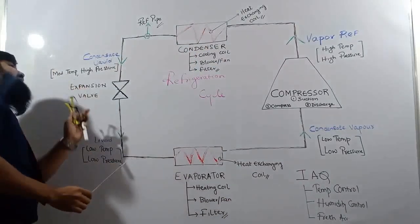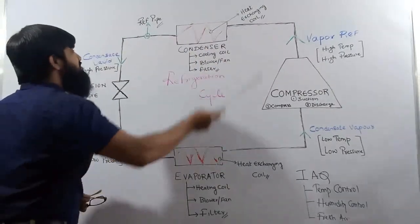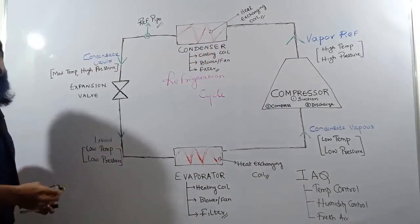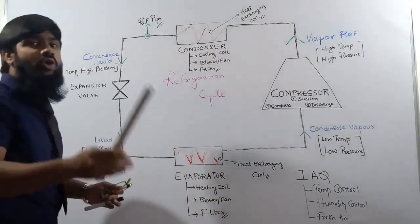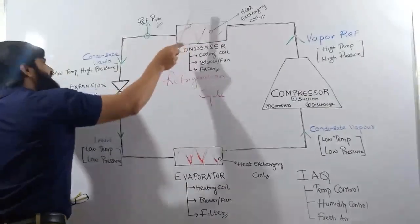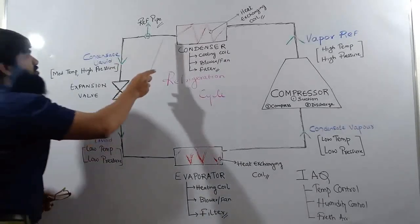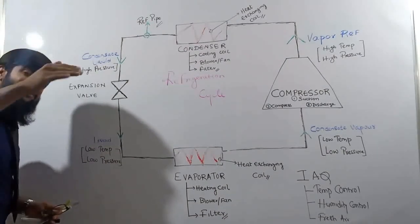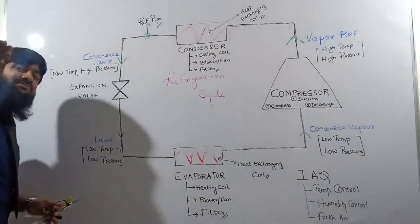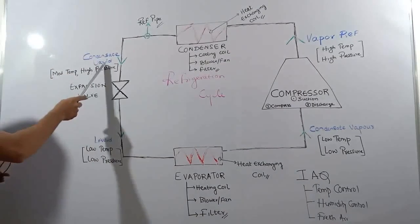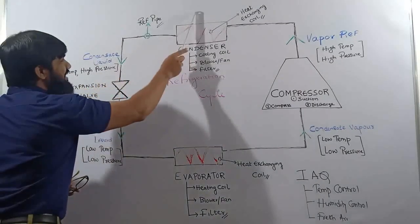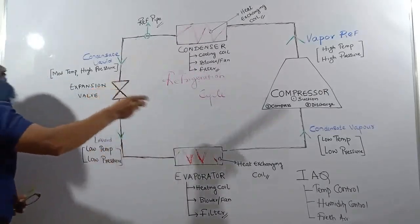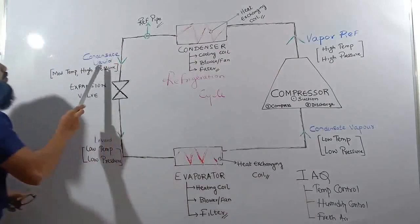The atmospheric temperature is lower than the refrigerant temperature residing within the heat exchanging coil. As we know, heat transfers from a high temperature body to a low temperature body, so heat is rejected to the atmosphere. As the refrigerant rejects heat, it converts from vapor refrigerant to condensate liquid. This condensate liquid is the output of the condenser.